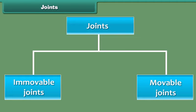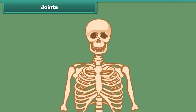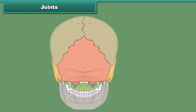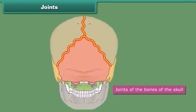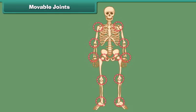Immovable joints are the joints where no movement of the bones is possible. The joints of the bones of the skull are immovable joints. Most movable joints allow free movement of the body parts, whereas in some joints only a little movement is possible.